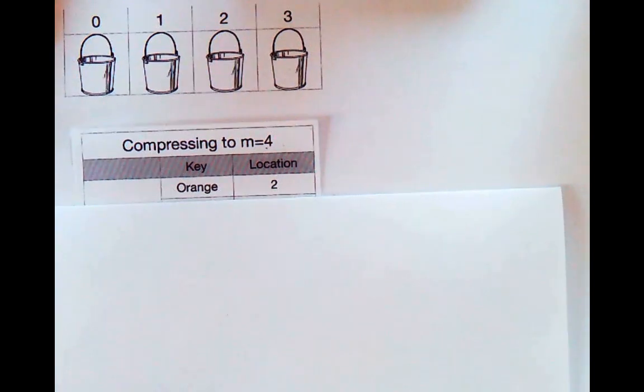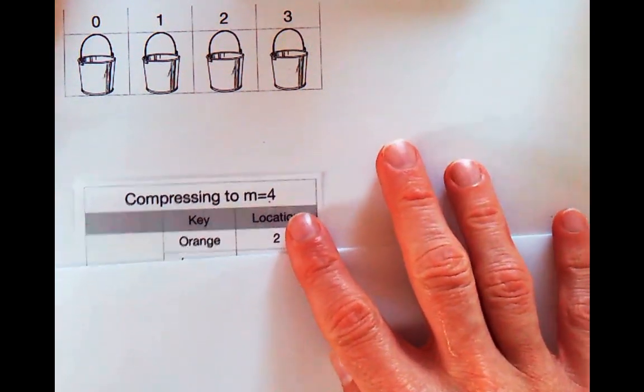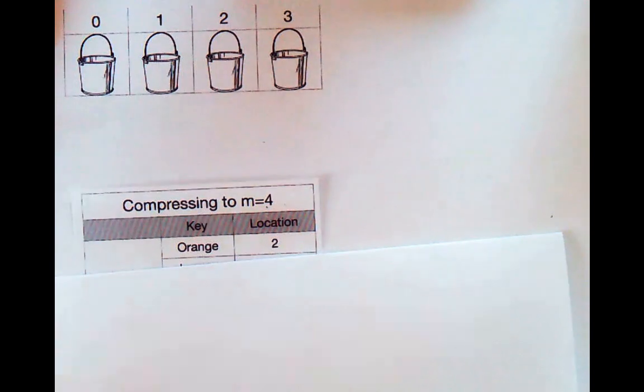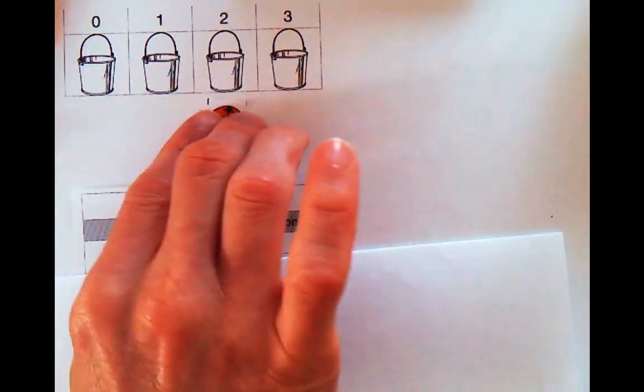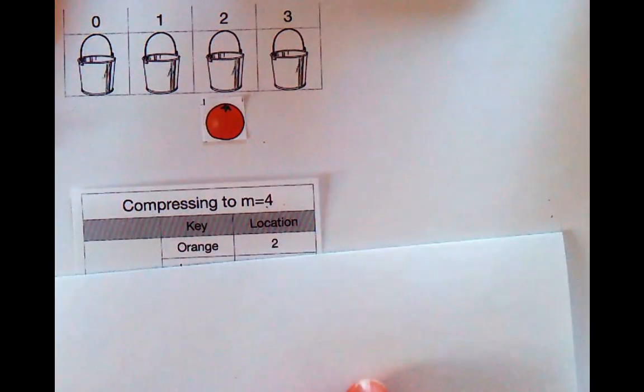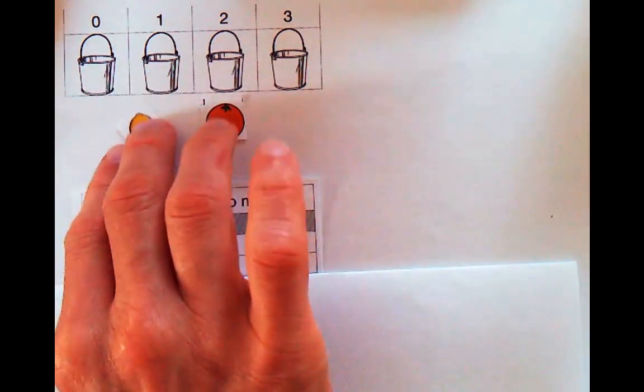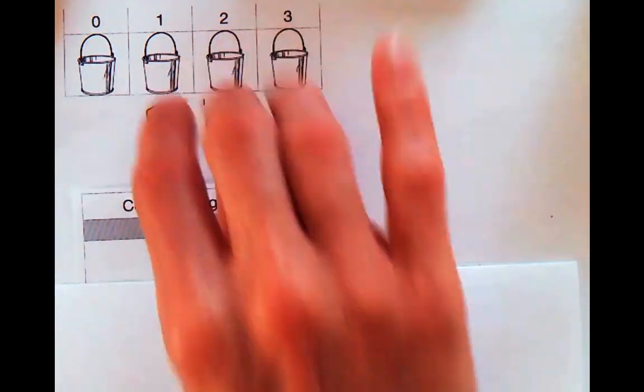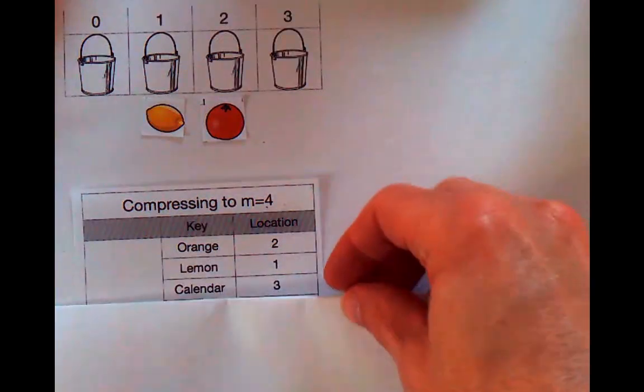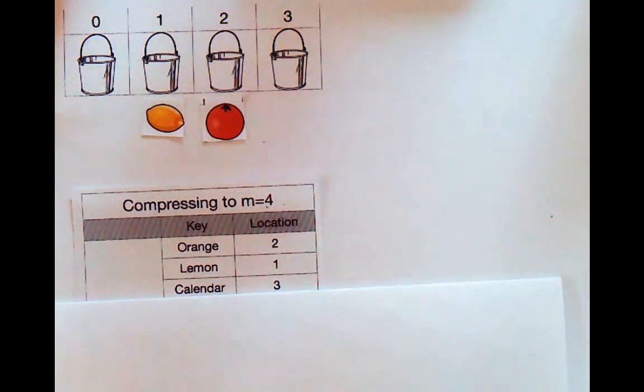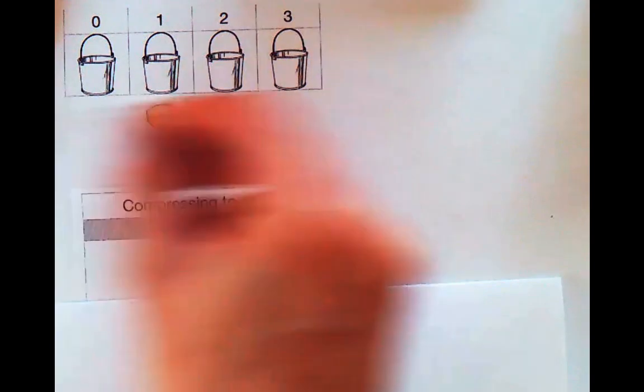I'm just going to go through the process here. We're going to put orange in location two. I'll add the items below the bucket to indicate a list being built. Then we'll put lemon in bucket one. After that, we're going to put a calendar in bucket three.